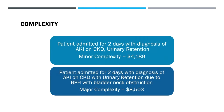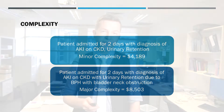Let's go through some examples. A patient admitted for two days with AKI on the background of CKD and urinary retention — just writing that gives minor complexity at $4,000. If we flesh out the urinary retention and simply put 'due to BPH with bladder neck obstruction,' that more than doubles the income to $8,500.